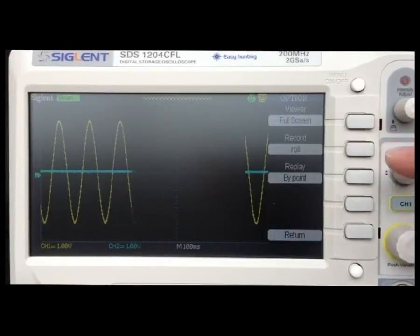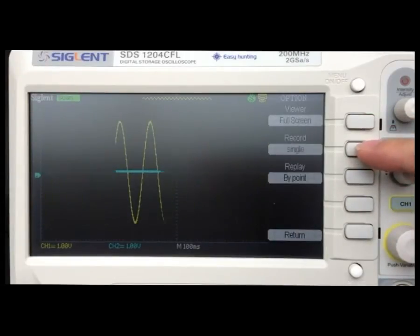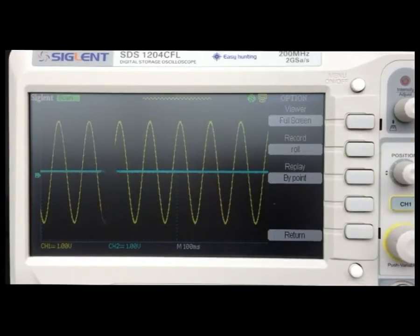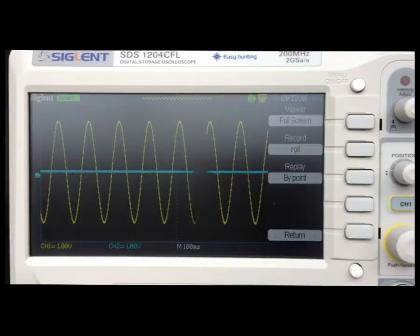About the record mode, you can choose row and single. In row mode, the recorder records the waveform persistently, and the later waveform will cover the former one. In single mode, the recorder will stop waveform saving when the memory is up to 7 MB.